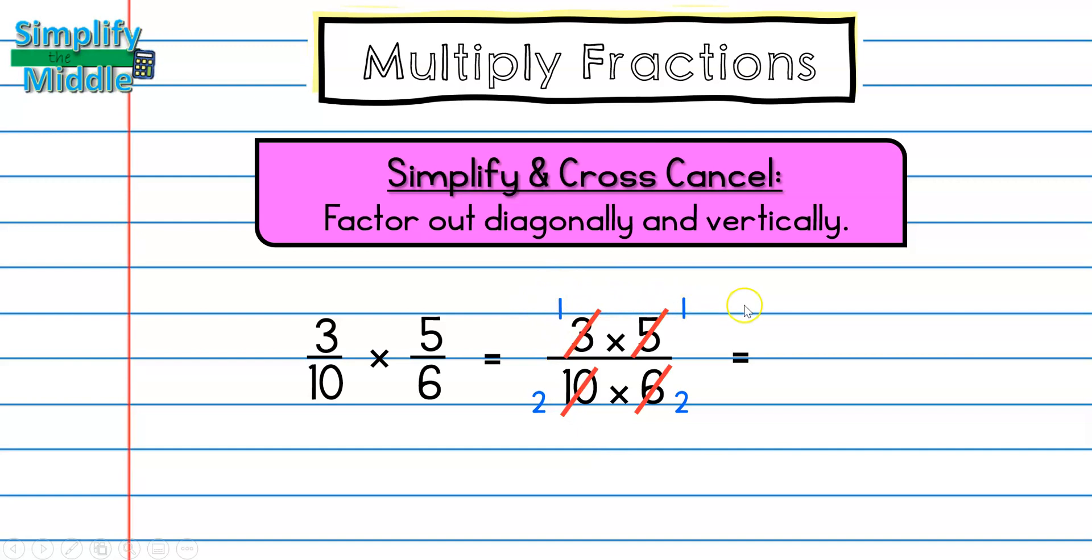Now I'll multiply these straight across. So 1 times 1 is 1 and 2 times 2 is 4. So my answer is 1 fourth. And if I was to simplify 15 sixtieths, it would simplify to 1 fourth. But this way, it's a lot easier to calculate.